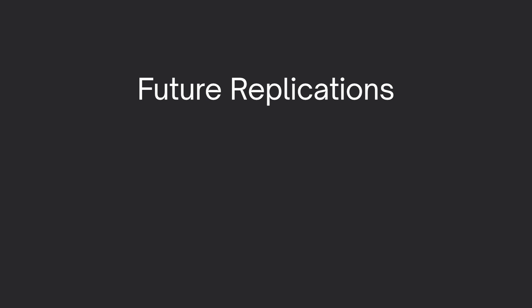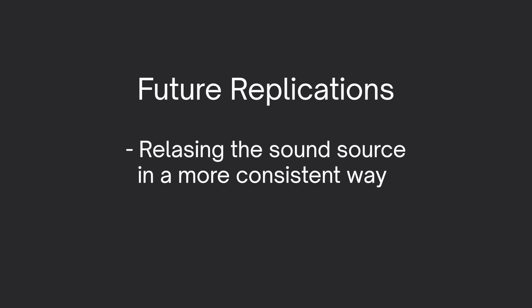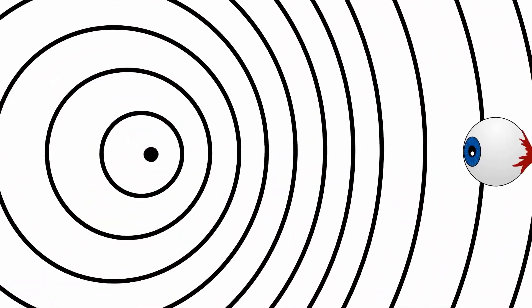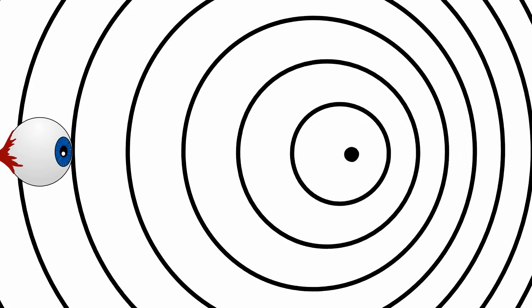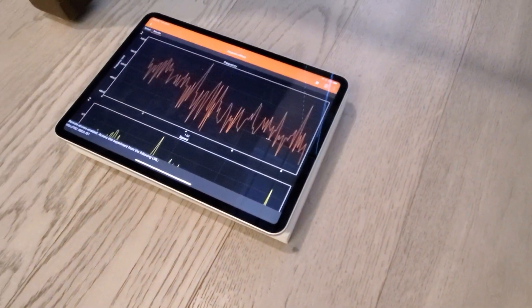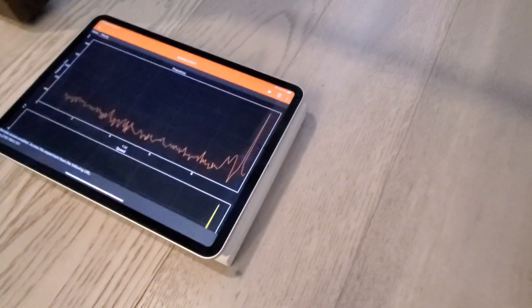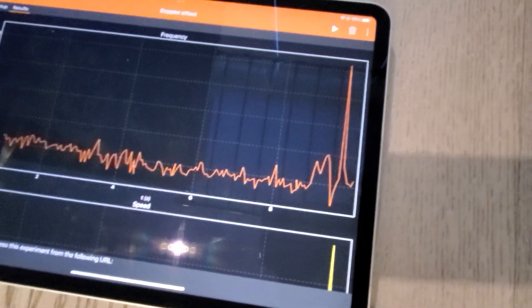For future applications, try to release the sound source or phone in a more consistent way — you can automate this using a contraption to reduce human interaction. A different pendulum could also be used, as the shape of a phone is not the best. In this video, you learned how the Doppler effect works and how it can be applied to real life. The Doppler effect in sound refers to the change in frequency or pitch of a sound wave as perceived by an observer when the source and observer are in relative motion. When the source moves towards the observer the frequency appears higher, and when it moves away the frequency appears lower. This principle was demonstrated using a pendulum contraption with classroom-accessible materials and cell phones to collect data.